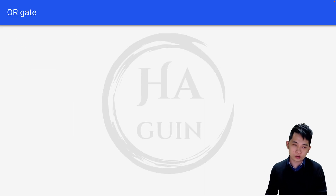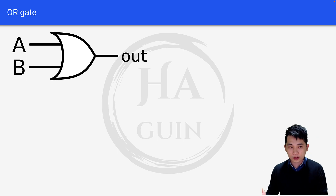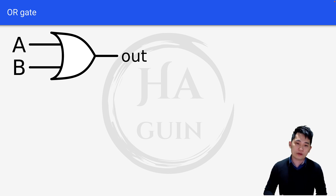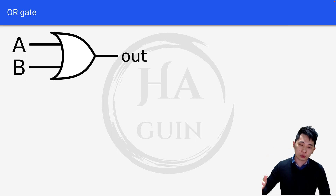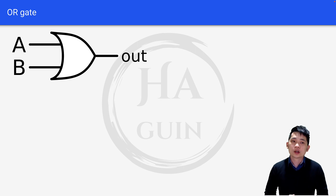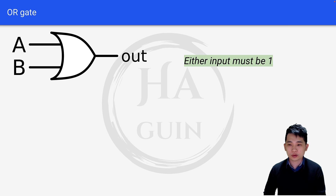So let's start with OR gate. If you look at this, it's a symbol representation of an OR gate. We have input A and input B on the left, and we have output on the right, labeled OUT. In order for the output to be 1, either of the inputs must be 1.